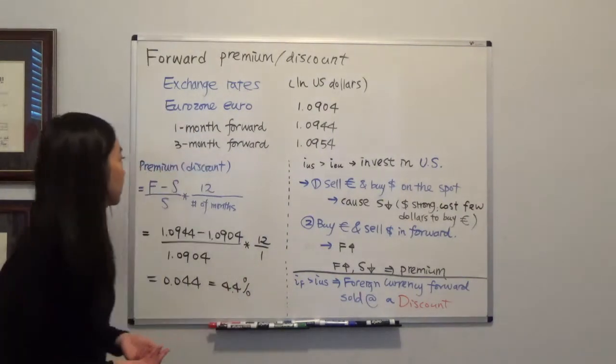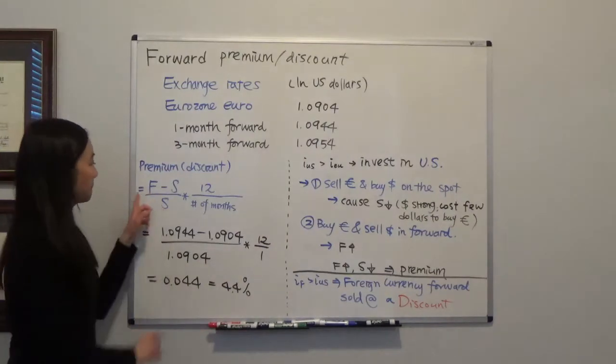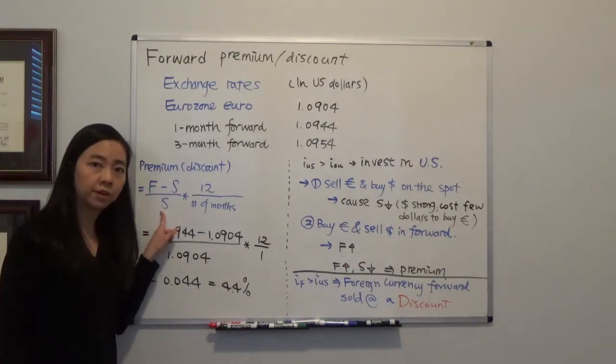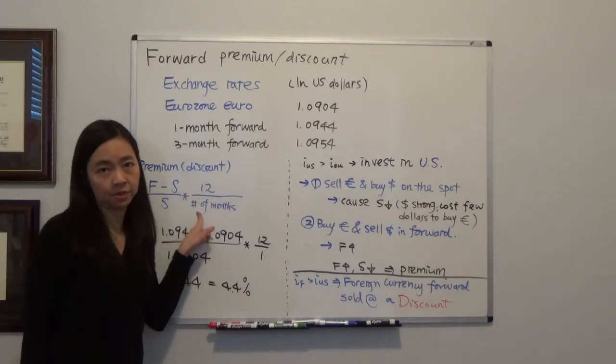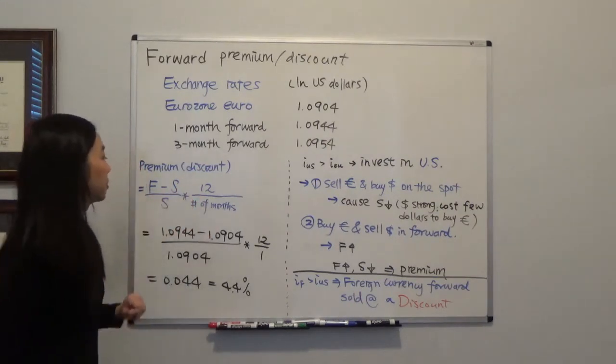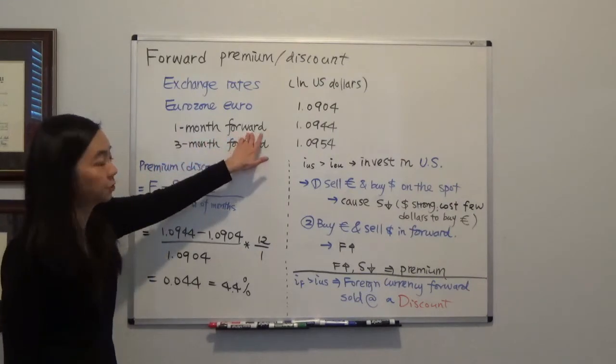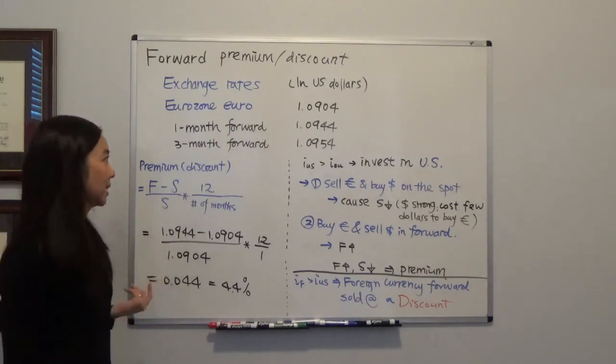So here's the formula: the forward rate minus the spot rate divided by the spot rate times 12 divided by the number of months. So suppose we want to calculate whether the one month forward euro is being sold at a premium or discount.